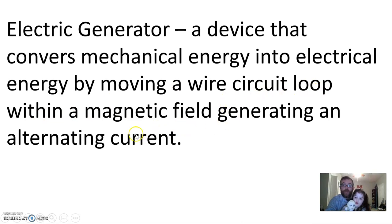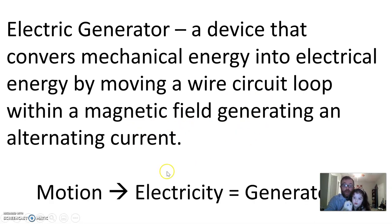We've got a wire circuit loop within a magnetic field, which generates an alternating current. So, when motion becomes electricity, that's a generator.